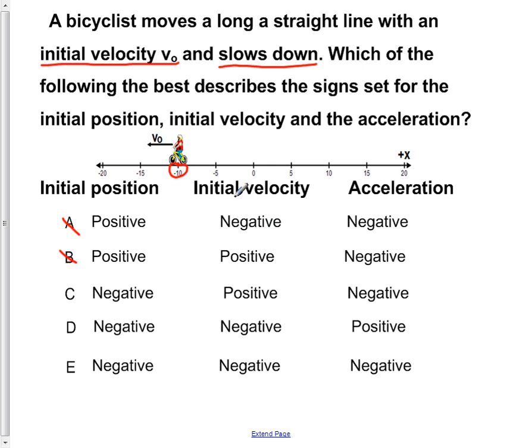The second thing to check for is the initial velocity. We see that the initial velocity, v-naught here, is pointing in the negative direction. So our v-naught is also negative. So we go through our choices that we have narrowed down, C, D, and E. We see that C is not possible, because it's saying that we have an initial positive velocity, when in fact it's negative. So now we've narrowed it down to both D and E.